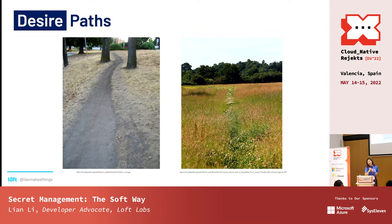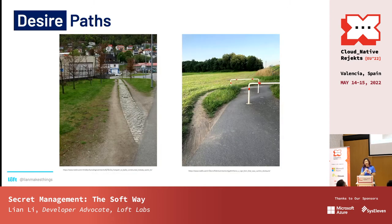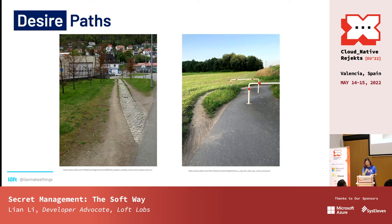Let's take a step back. There are these things called desire paths. Desire paths are created by erosion, by people or animals walking along a path that is most convenient for them. If your infrastructure is very poorly constructed, like the one on the left, or just really inconvenient, like the one on the right, people will just take another path.